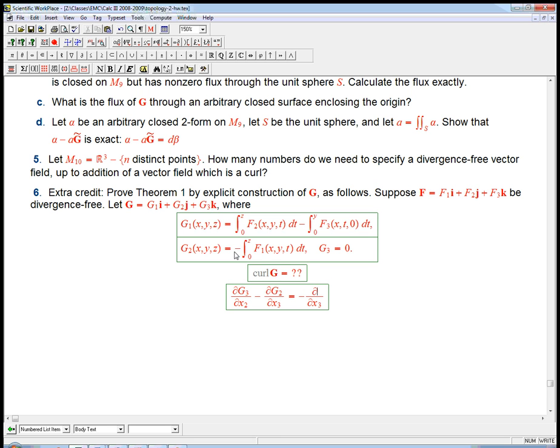All we need to do is verify that curl of g is equal to f. Let's just calculate out the curl g, component by component. First, we take the partial derivative of g₃ with respect to x₂ minus the partial derivative of g₂ with respect to x₃. This should be f₁. g₃ is 0, so that dies. Now this is a derivative with respect to z of an integral in z—that's the fundamental theorem of calculus. We're done. That's right on.